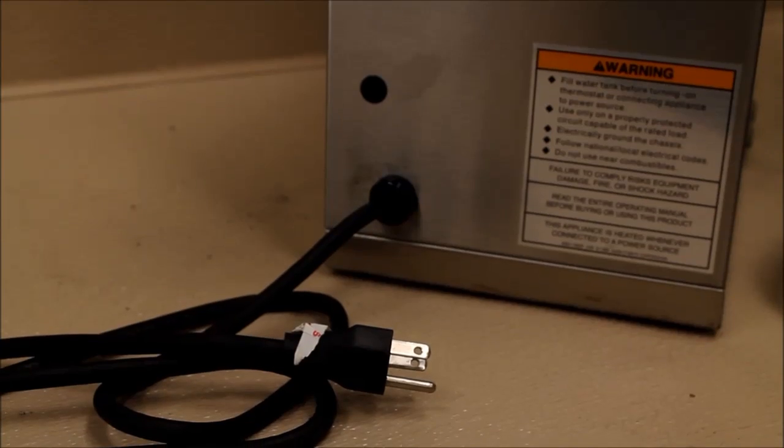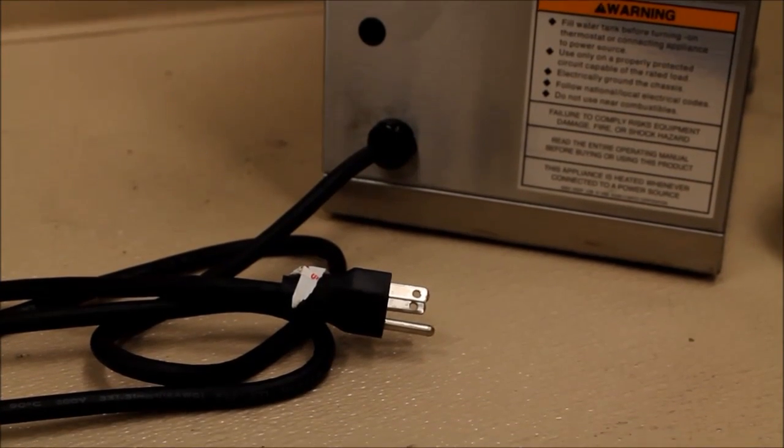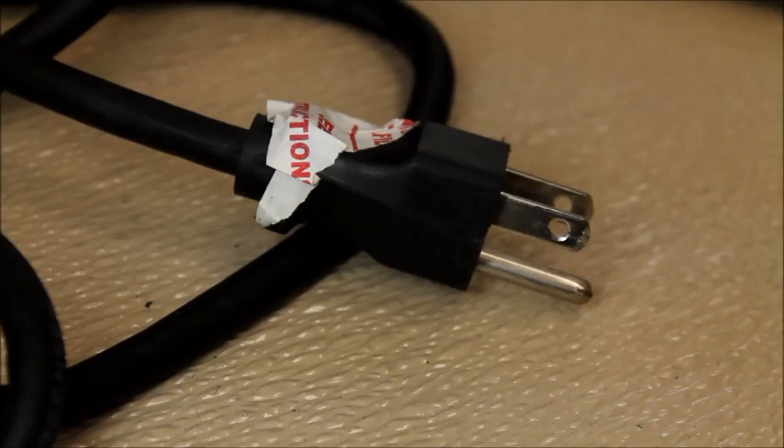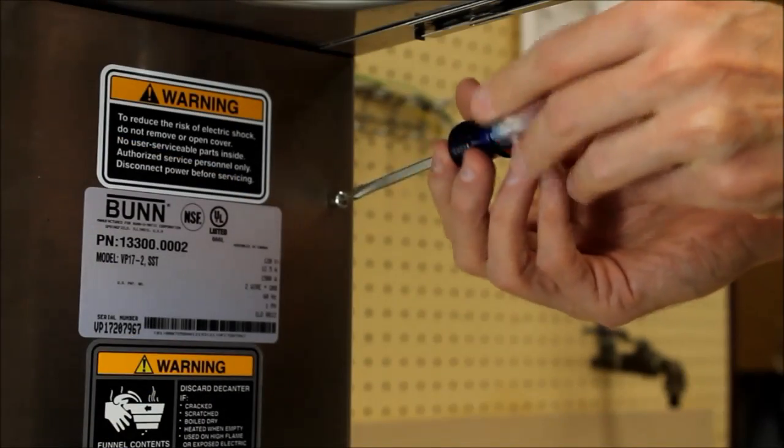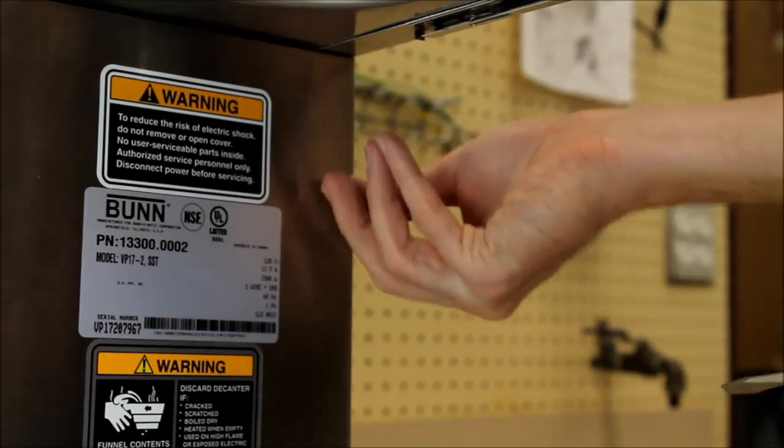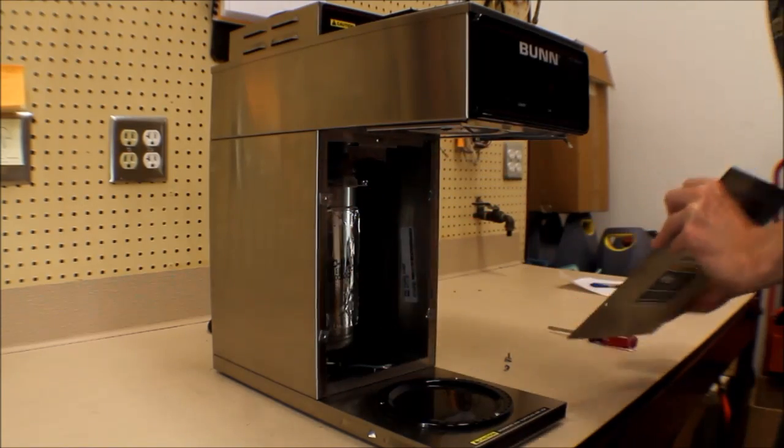Do not plug unit in until setup is completed. The first step is removal of the front panel directly behind brew basket. It's quite simple as there are only four screws.